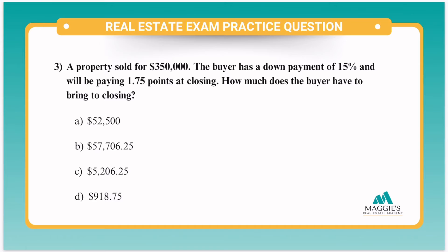Question number three. A property sold for $350,000. The buyer has a down payment of 15% and will be paying 1.75 points at closing. How much does the buyer have to bring to closing? This one is also asking how much does the buyer have to bring down at closing, and remember it also includes points. So we have to find the loan amount.